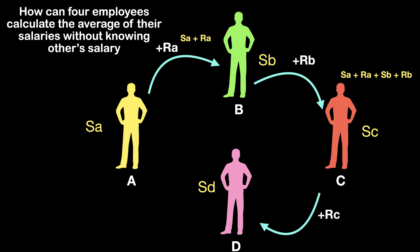Now D will receive the figure Sa plus Ra plus Sb plus Rb plus Sc plus Rc. In the next step, D does the same and gives the final figure to A without showing it to C. Now A will receive the figure Sa plus Ra plus Sb plus Rb plus Sc plus Rc plus Sd plus Rd.